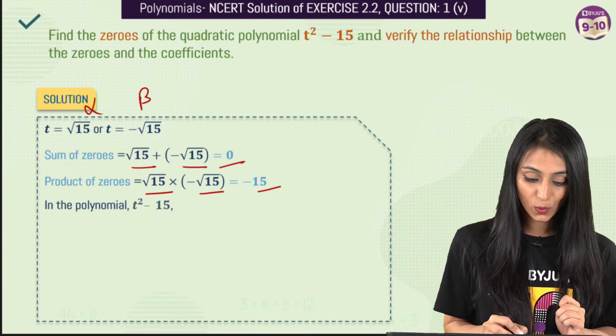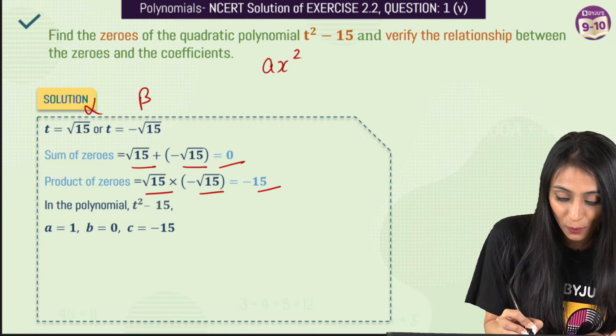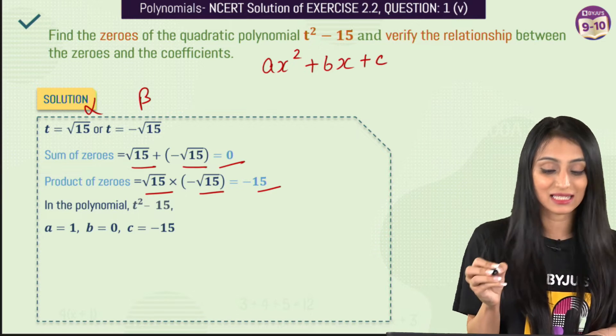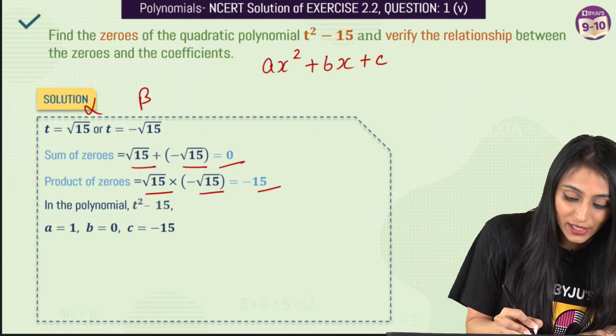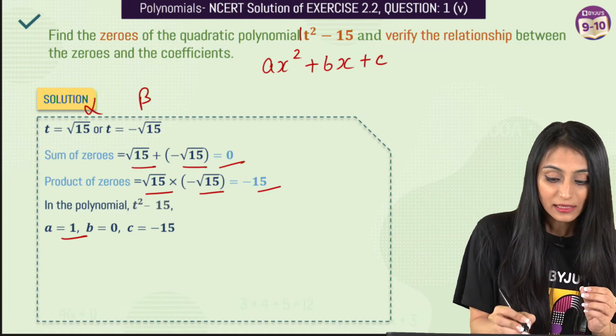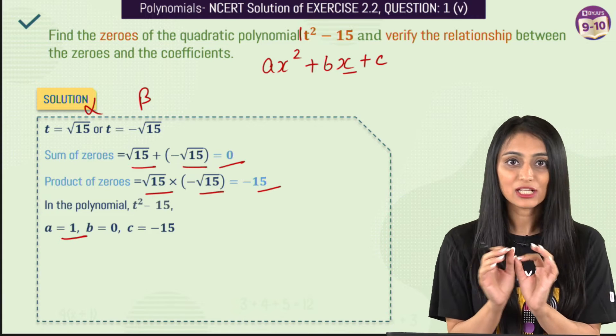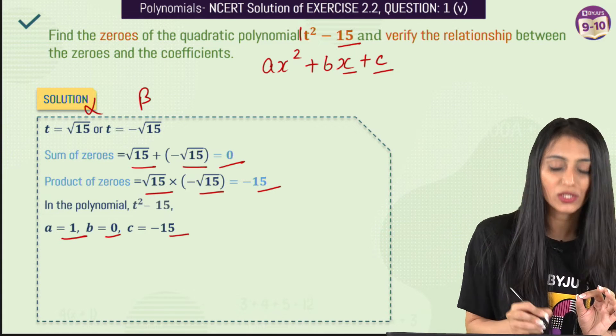Now I'm going to compare this polynomial with the general form ax² + bx + c. Instead of x, we have the variable t. Nothing is written with t², so a = 1. The term with single t is not present.